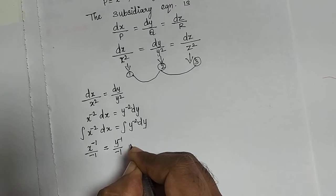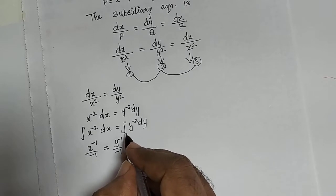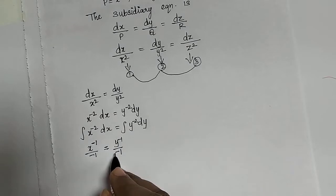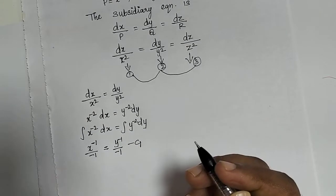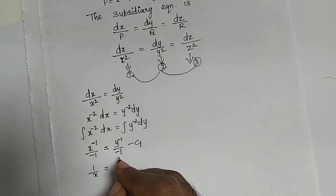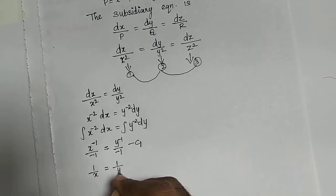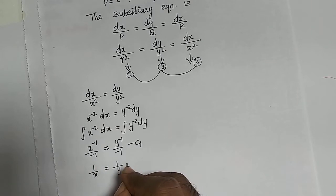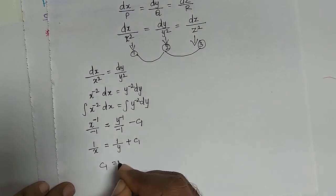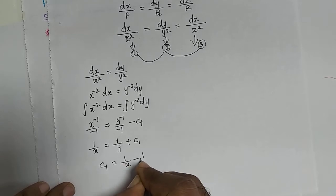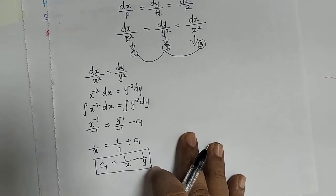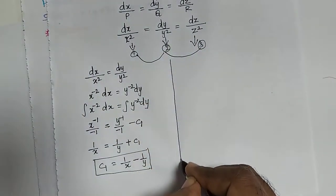On the right side, integrating y to the power minus 2 gives y to the power minus 1 divided by minus 1, plus a constant. Since both terms have a common minus sign, we take the constant as minus c1. Writing x to the power minus 1 as 1/x and y to the power minus 1 as 1/y, and cancelling the minus signs, we get c1 equals 1/x minus 1/y.